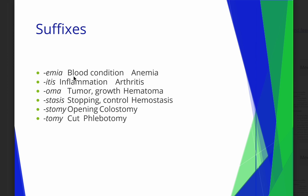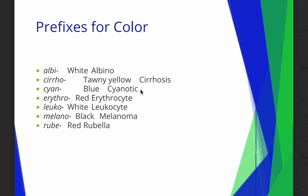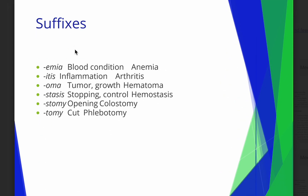Emia is a suffix, meaning it goes at the end of the word. Emia means some type of condition that has to do with the blood. Anemia, which most of us have heard of, means a low blood count. The prefix A means without. And emia on the end means there's a blood condition. Some things in medical terminology make sense and some things don't.